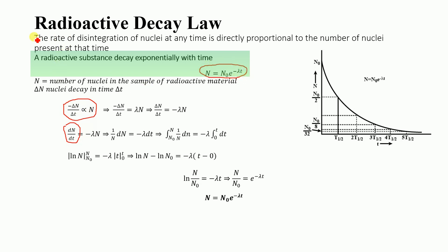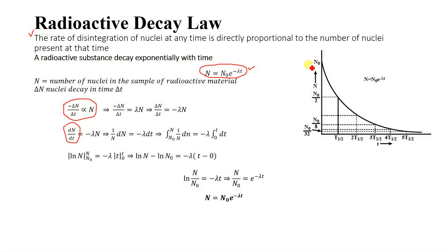Using this initial statement, we will derive the equation for this final form. The number of nuclei at that time is equal to the number of initial nuclei present in the radioactive material: N = N₀ · e^(−λt).